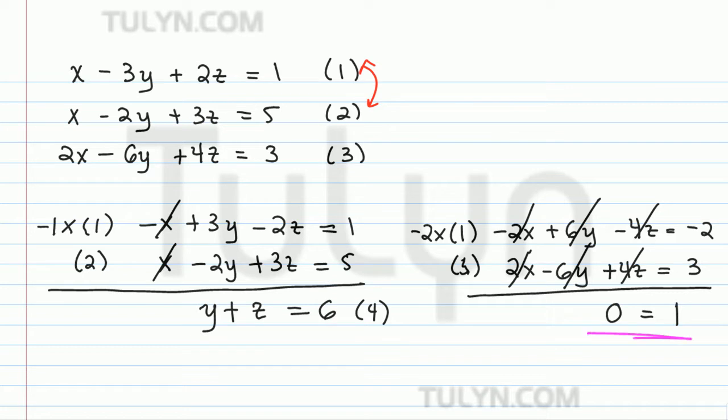Now this is what's known as a false statement. And you can see where the term comes from because 0 is never equal to 1. So saying that it is equal to 1 isn't true.